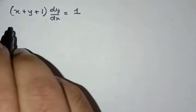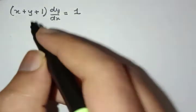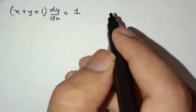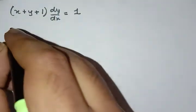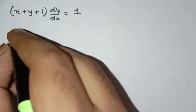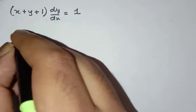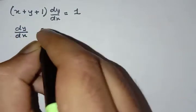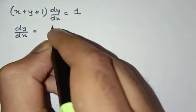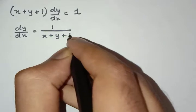We are required to solve this differential equation: (x plus y plus 1) dy/dx equals 1. First, let us rearrange this. We get dy/dx is equal to 1 divided by (x plus y plus 1).